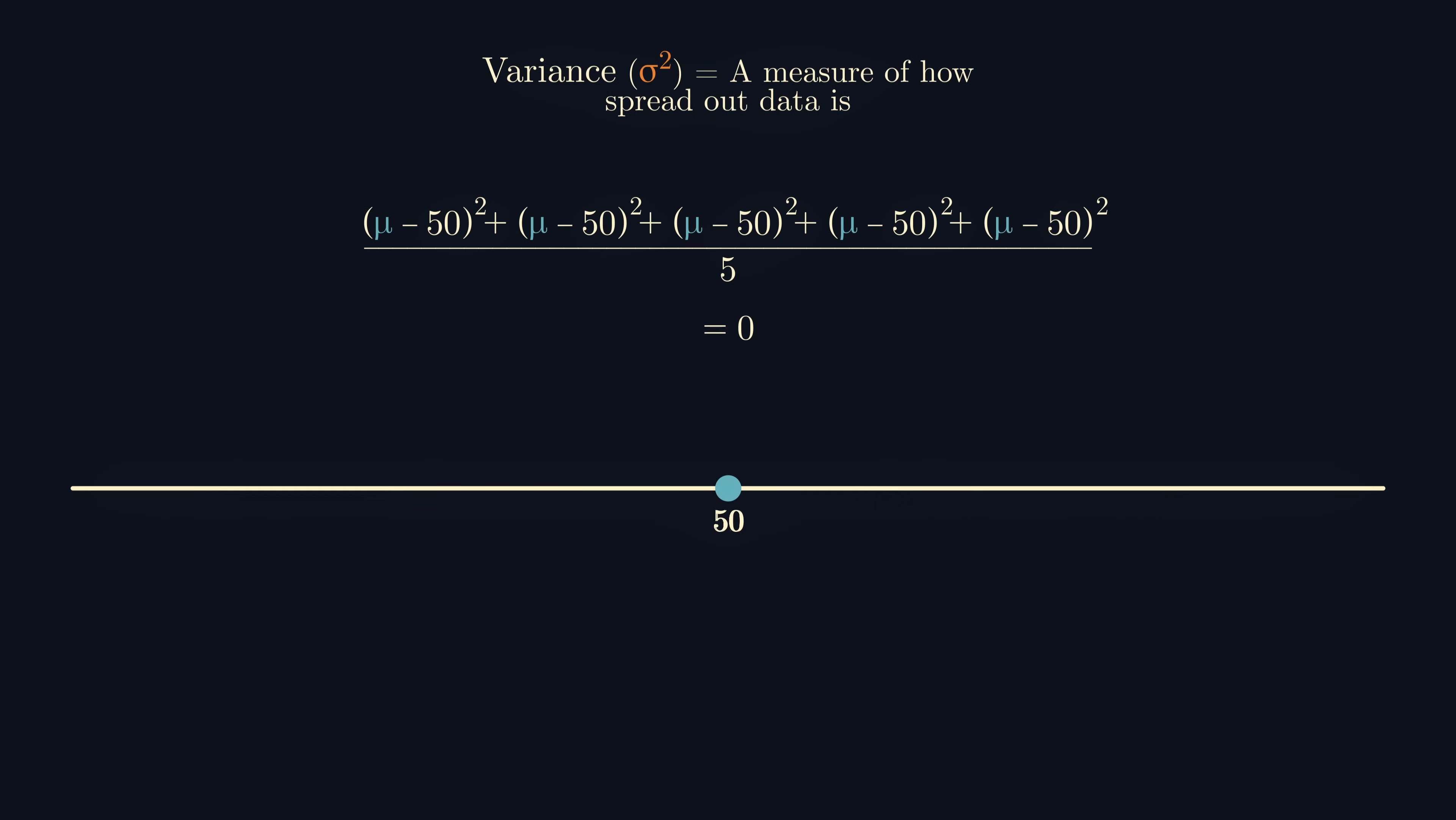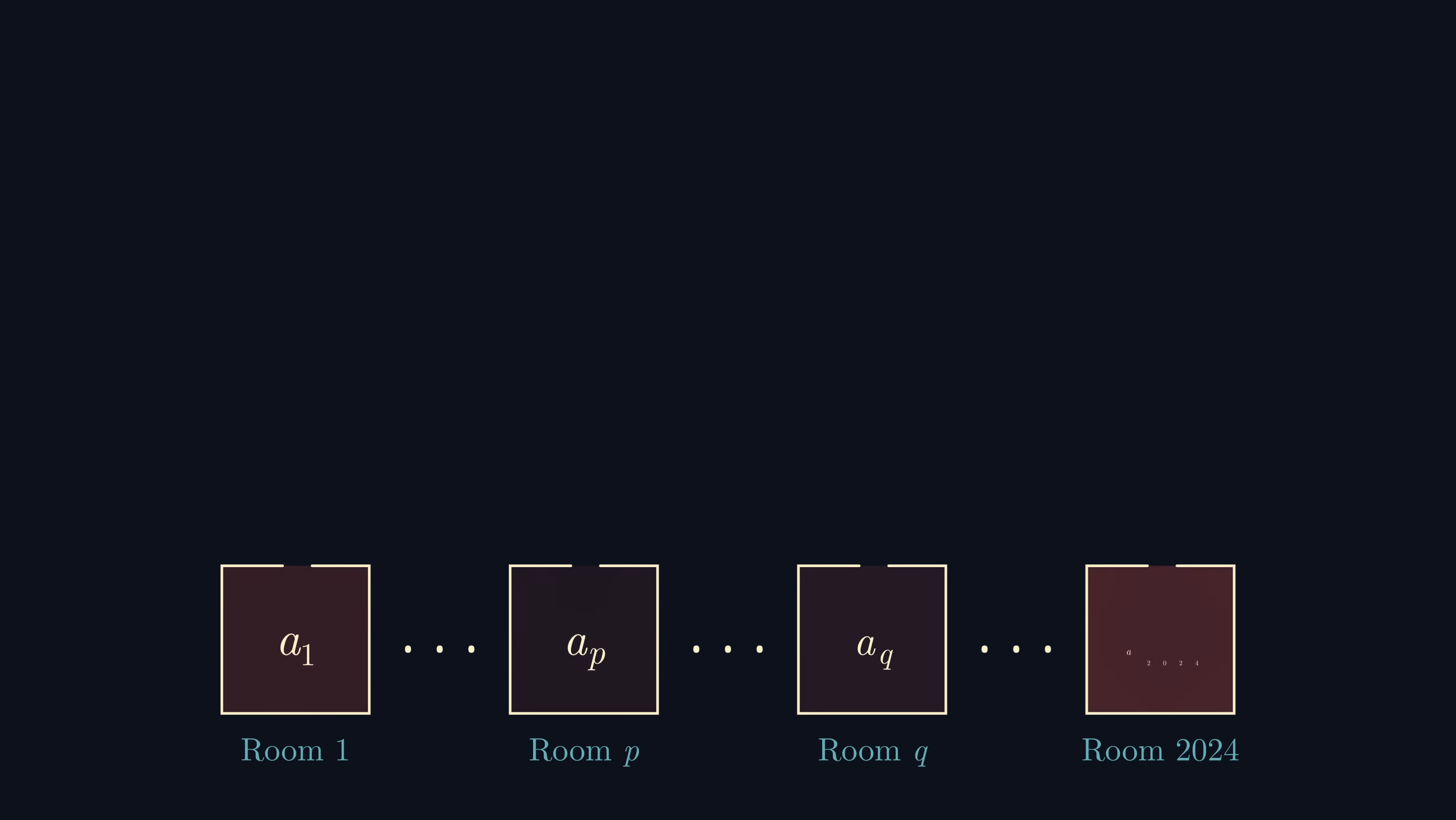We can now consider the variance in the number of insects in each room after each second. Let xn be a random variable, which is equally likely to return the number of insects in any of the rooms after n seconds. The mean number of insects in each room is 2024 squared over 2024, which is just 2024. We can now write an expression for the variance of xn. But what we actually care about is, how does the variance change from n seconds to n plus one seconds?